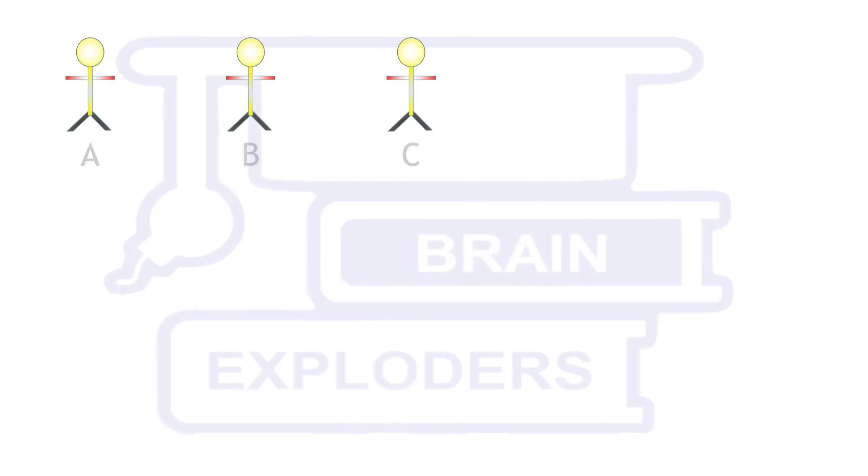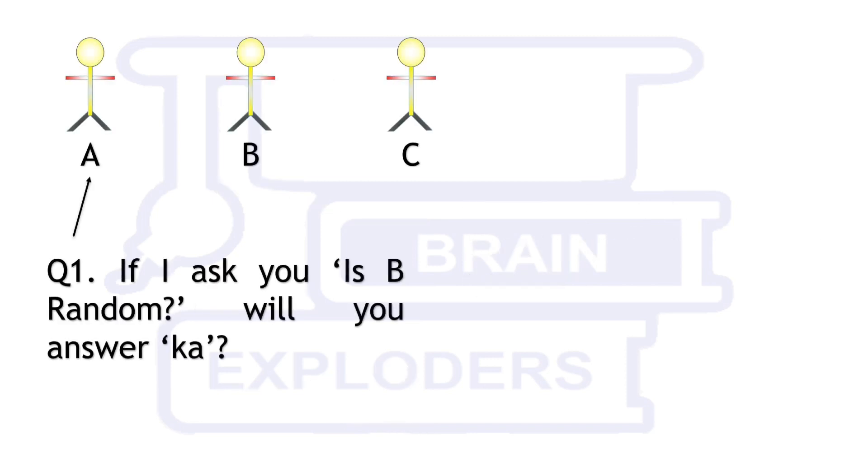Our first question is to A. If I ask you is B random will you answer Ka. Now we have to check five different cases.